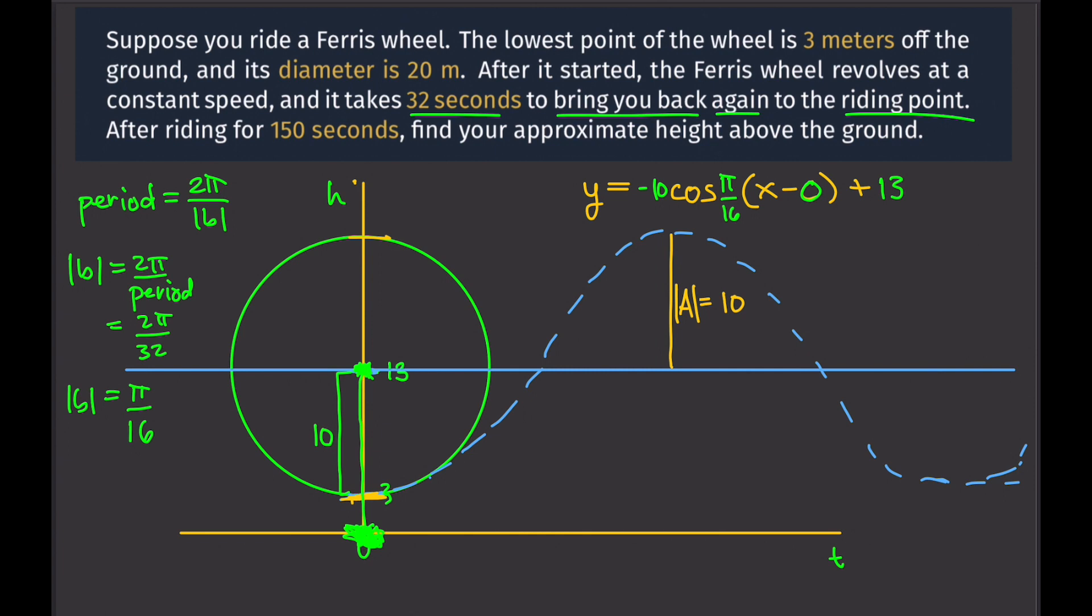And now, our equation is almost done. We can write that as negative 10 cosine π over 16 x plus 13. And that's it. Now, our variable x is time. So, we can replace that with T. And our y is H. So, let's replace that with H. And that's the equation that we will use to answer the question.